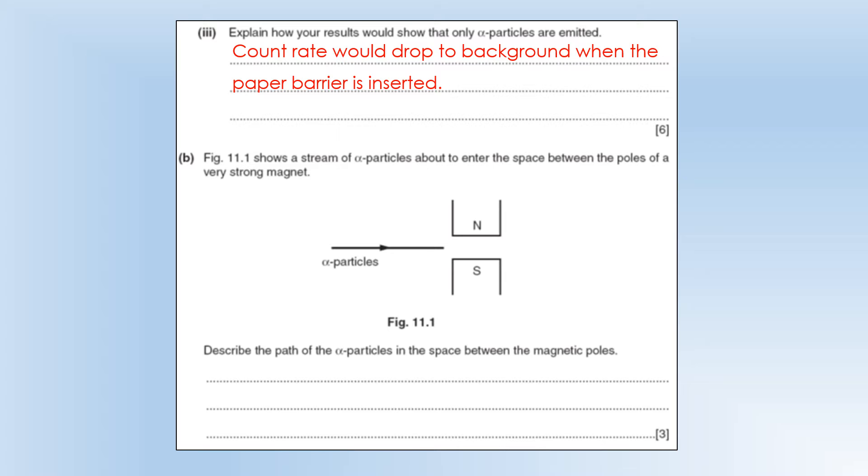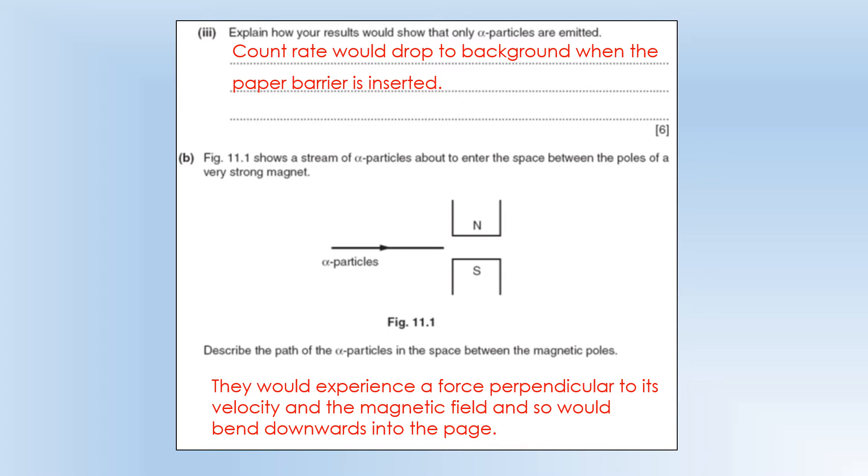so you point your first finger downwards, and you can see your thumb points into the page. So it's going to experience a force perpendicular to the velocity and the magnetic field, and it would be bent downwards into the page.